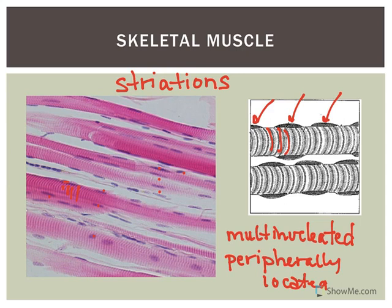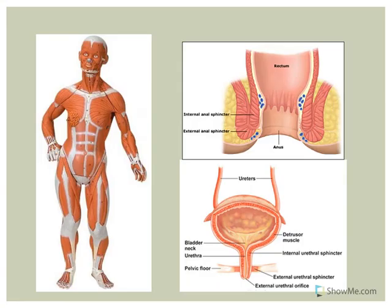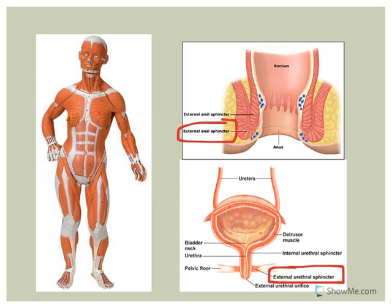Skeletal muscle is called such because of its attachment to your skeleton, though not every skeletal muscle attaches to bone. It moves the bones of the skeleton — for example, contracting your biceps brachii muscle allows you to flex your elbow. It's also a component of the external urethral sphincter and external anal sphincter, which control the exit of urine and feces. These are voluntary muscles.